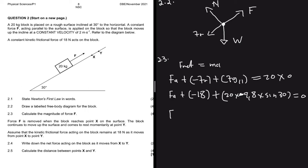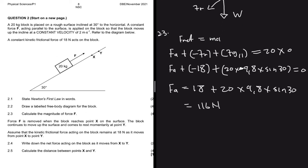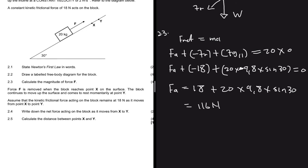Taking the other forces to the other side, F applied equals 18 plus 20 multiplied by 9.8 multiplied by sine 30 degrees. Putting that into the calculator gives us 18 plus 20 times 9.8 times sine 30 degrees, which equals 116 Newtons.